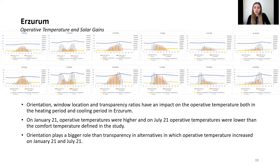For Erzurum, orientation, window location, and transparency ratio have an impact on operative temperature both in the heating and cooling periods. For all options, operative temperature values for January and July 21st were outside the comfort temperature defined in the standard; therefore, it is necessary to use active systems for all alternatives. Orientation plays a bigger role than transparency ratio in alternatives where operative temperature increased on January and July 21st.